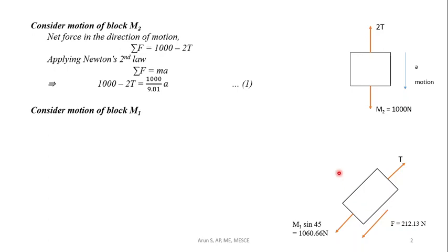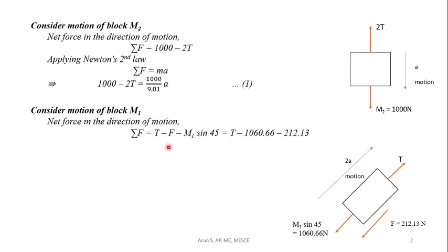The forces acting down the plane oppose motion. Block M1 moves up along the plane with acceleration 2a. Net force in the direction of motion is T minus F minus M1 sin 45, which equals T minus 1272.79.